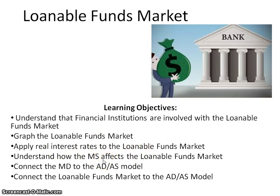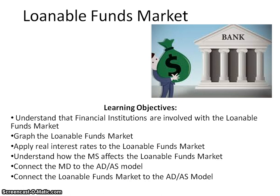We're going to look at the connection of the money supply from the money market graph and how that affects the loanable funds market. Then we'll connect the demand for money to the aggregate demand–aggregate supply model from Unit 3, and also see how the loanable funds market connects with the AD-AS model.